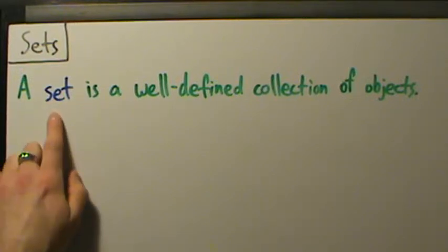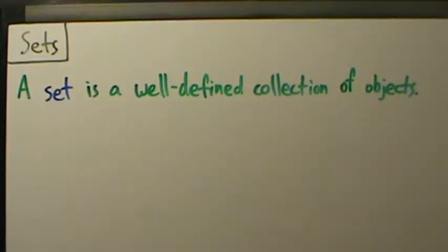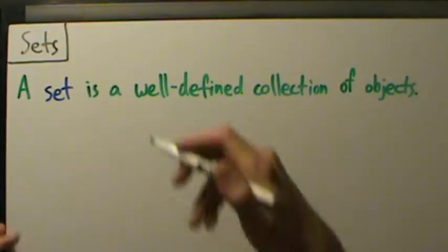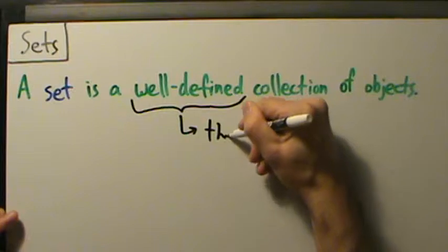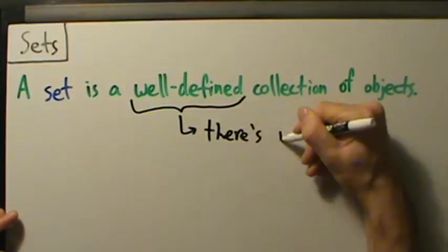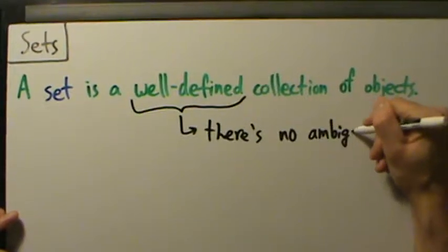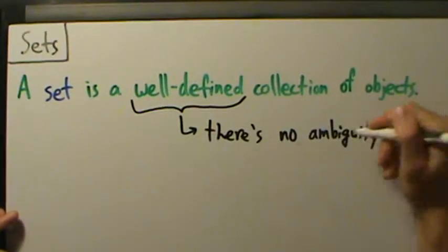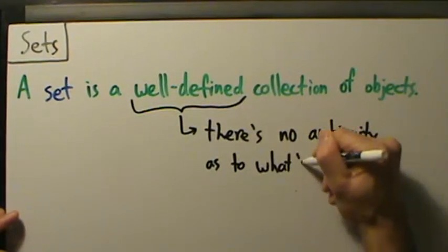But when we talk about sets in a mathematical context, we have this notion of being well-defined. So what does that mean to be well-defined? Well-defined just means there's no ambiguity as to what's in the set.